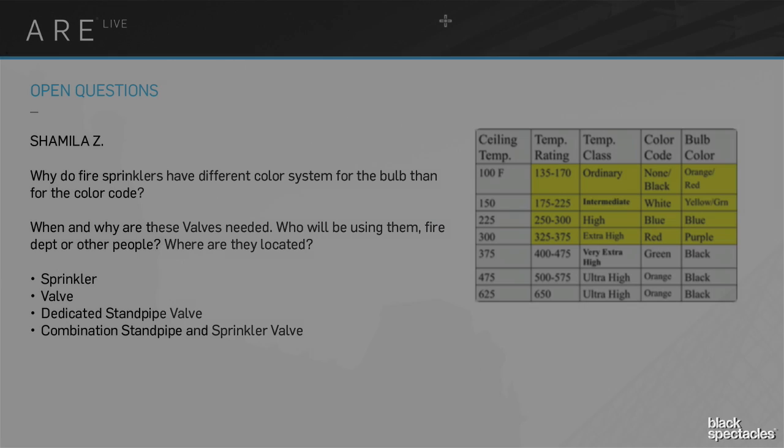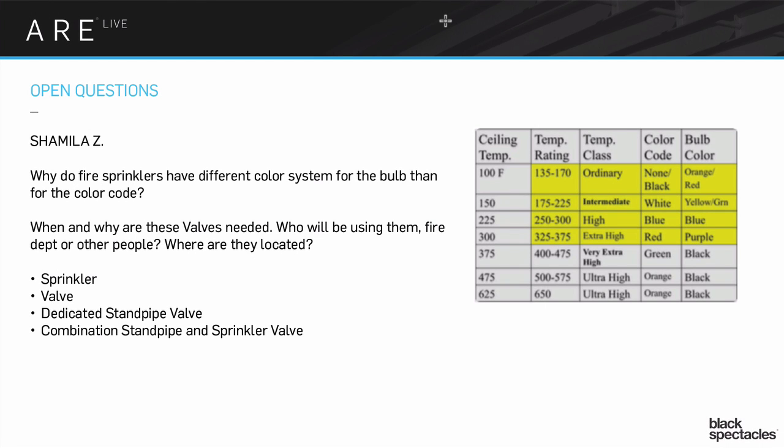So why do fire sprinklers have different color systems for the bulb? I just want to focus on the idea of the color system for the bulb — that's the actual little part of the sprinkler head that breaks open and the water actually comes out.